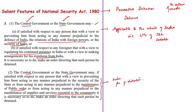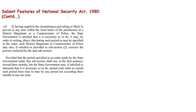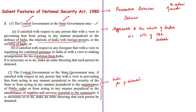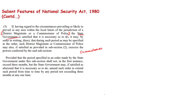This act also states that the district magistrate or the commissioner of police can exercise the powers of a detaining authority, and this power will be delegated by the concerned state government if circumstances prevail in their jurisdictions. The word 'circumstances' means scenarios where persons may act in any manner prejudicial to the security of the state or in any other manner described above.